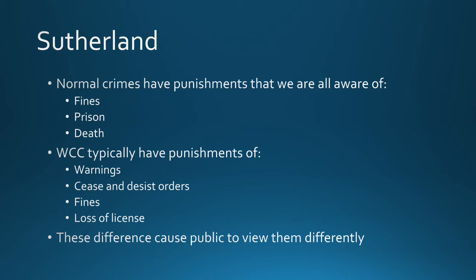Sutherland also suggests that normal crimes have punishments we're all aware of — fines, prison, and death. Basically, there are three things that can be taken away through due process: life, liberty, property. White-collar crimes typically have punishments of warnings, cease and desist orders, fines, or a loss of license in certain medical and legal cases. These differences cause the public to view white-collar offenses differently than street crimes.